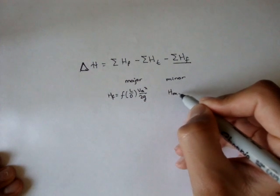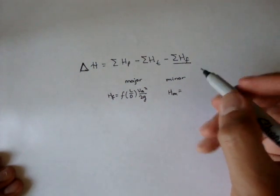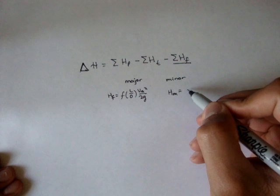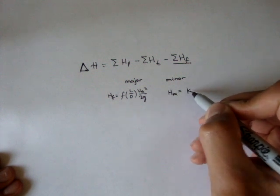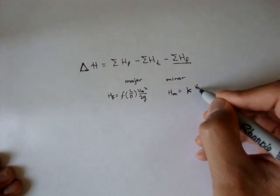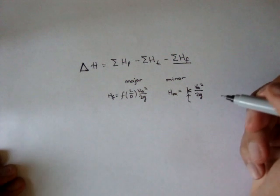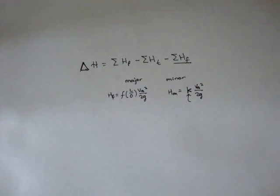And the minor, H minor, we say it's the summation of all the K, something called K times the average velocity squared over 2G. And this K we said to be the minor loss factor or the minor loss coefficient.